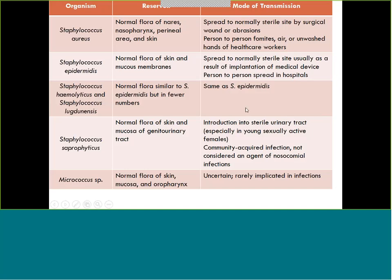Staph saprophyticus is a more common one that we might see. It is normal flora of the skin and the genitourinary tract. Staph saprophyticus is very commonly found with UTIs — urinary tract infections — especially in young women who are sexually active. Upon intercourse it can get introduced further in, especially if those women aren't cleansing well enough afterwards. It's typically a community-acquired UTI, meaning it didn't happen in the hospital.